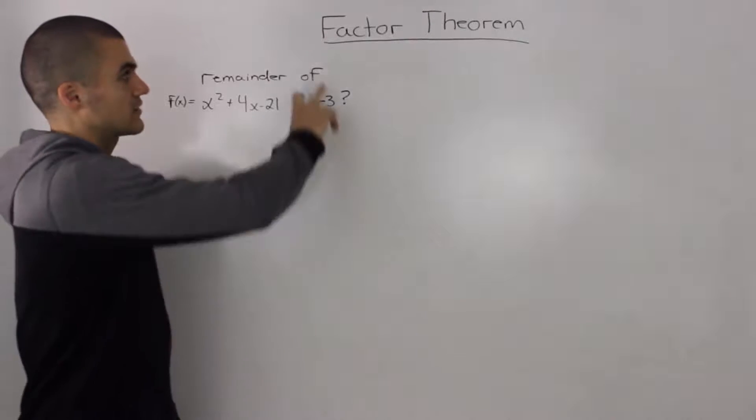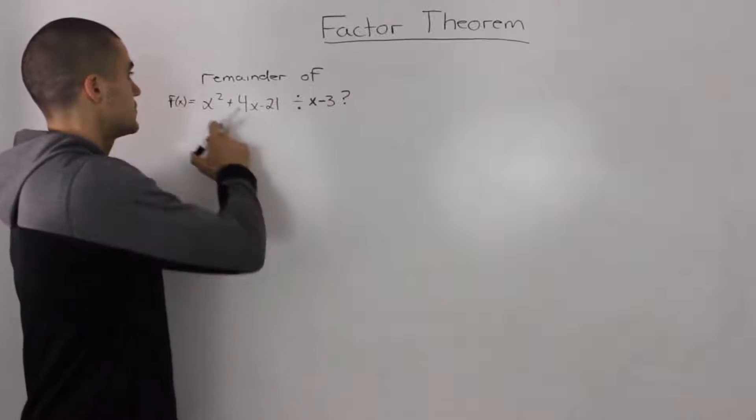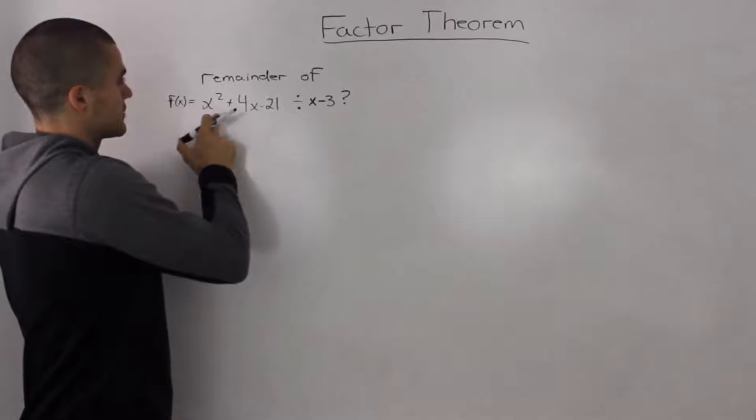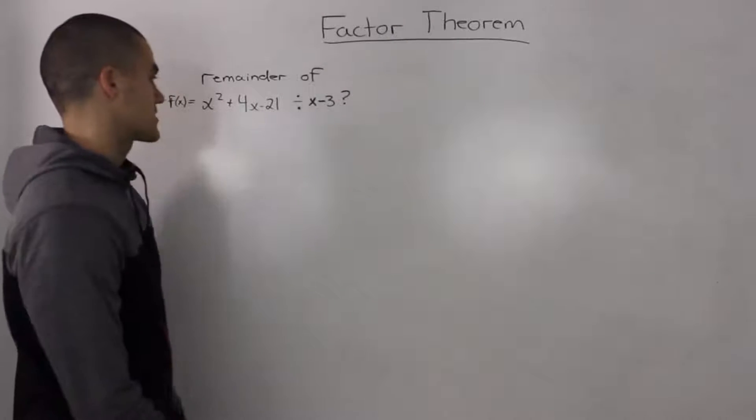In this video, we're going to talk about the factor theorem for polynomials. To start off, let's do this simple example where we have to find the remainder when f(x) = x² + 4x - 21 is divided by x - 3.